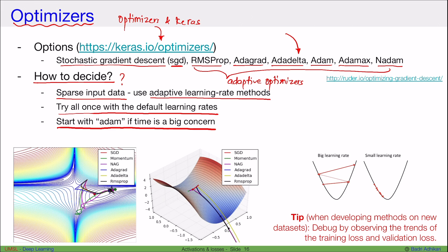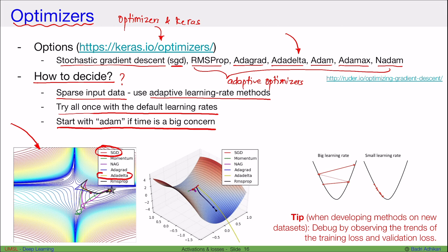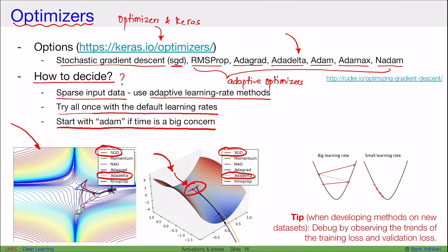Based on the dataset, your chosen optimizer may make the model converge faster or slower. In this picture, you can see the orange one — SGD — converges much slower, whereas Adadelta converges quite faster. This is the loss surface, showing how high the loss is. Starting with a very high loss, Adadelta converges quickly while SGD converges very slowly.